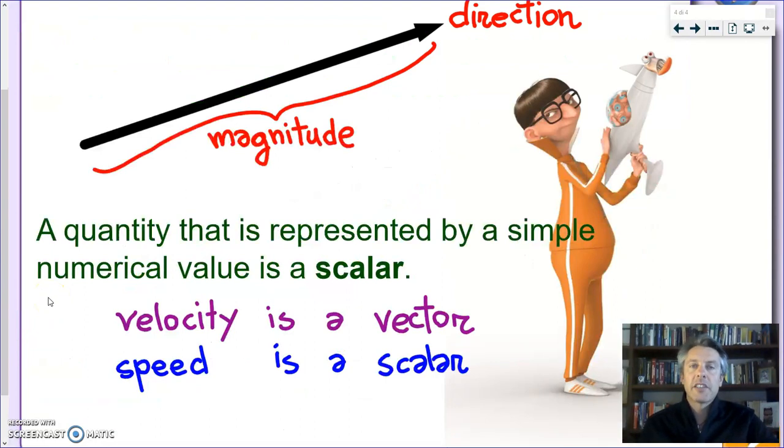So, how about a quantity like speed that's not represented by an arrow, does not have a direction? Okay, these physical quantities, which speed is one of the examples, but it's not the only example, are called scalars. A scalar is a quantity that is represented by a simple numerical value—I will add also by its unit.